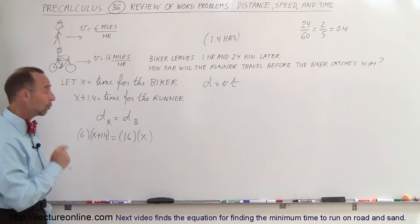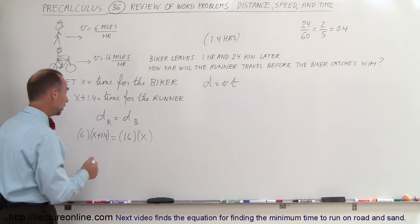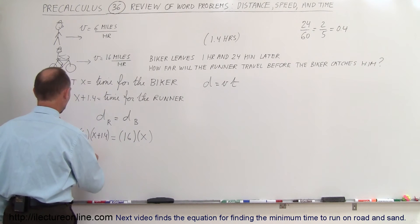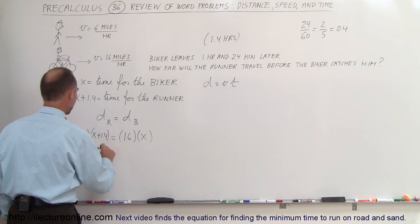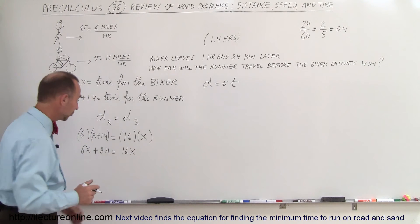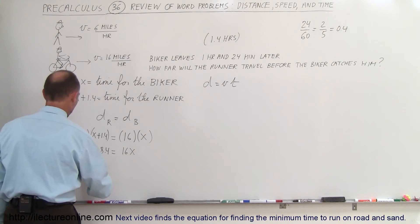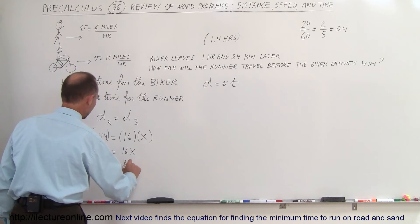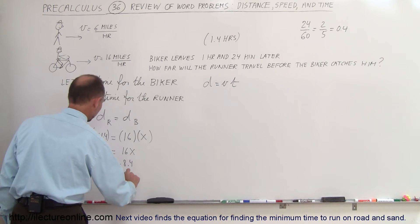All right, now we have to solve this equation for x. And so let's go ahead and get rid of parentheses. 6x plus 6 times that would be 8.4 equals 16x. Moving all the x's to one side, all the numbers to the other, so we have 6x minus 16x equals minus 8.4.